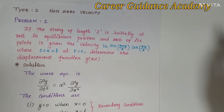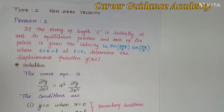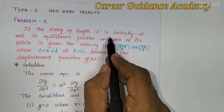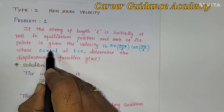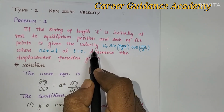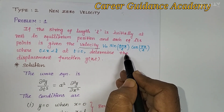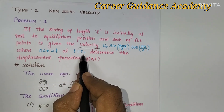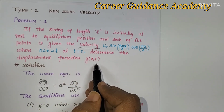Welcome to the Career Guidance Max playlist. In this video, we are going to discuss the problems in non-zero velocity models. The problem is: if a string of length L is initially at rest in equilibrium position, and each of its points is given the velocity v0 sin(3πx/L)cos(πx/L), where 0 < x < L at time t = 0. Determine the displacement function y(x, t).